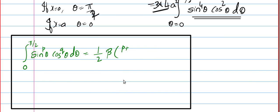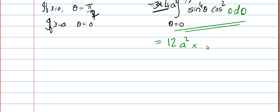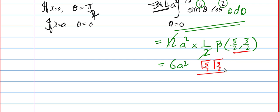So we have 12a² × (1/2) × β(5/2, 3/2). Converting to gamma: Γ(5/2) · Γ(3/2) / Γ(4). Now, for gamma values with denominator 2, you reduce by 1 each time until you reach 1/2, and Γ(1/2) = √π. So Γ(5/2) = (3/2)(1/2)√π and Γ(3/2) = (1/2)√π. The denominator Γ(4) = 3! = 6.